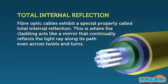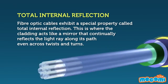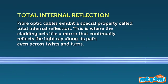Fiber optic cables exhibit a special property called total internal reflection. This is where the cladding acts like a mirror that continually reflects the light ray along its path, even across twists and turns.